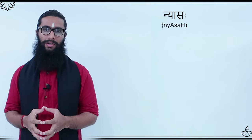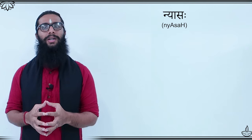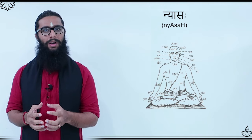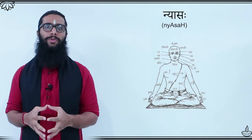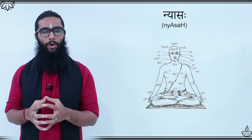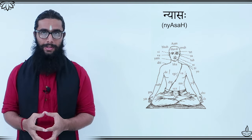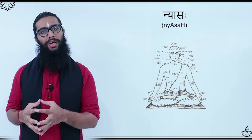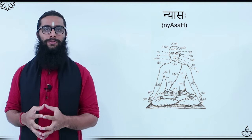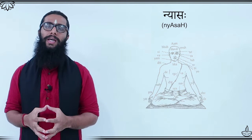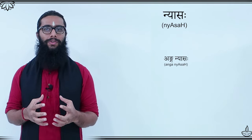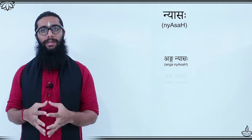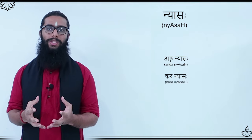The next component is nyasa, or placement. This is the act of chanting specific mantras and focusing on various parts of the body, either mentally or through touch. The purpose of this is to invoke specific deities and their attributes into the corresponding parts of the body. Two main types of nyasas are anganyasa, which is invoking energies into different parts of the body, and karanyasa, which is invoking them into one's palms.